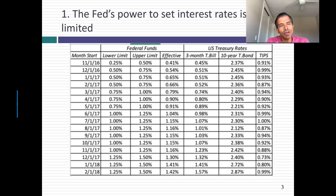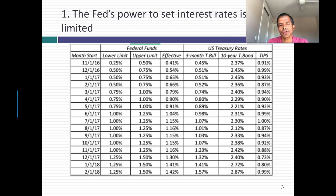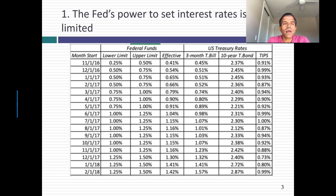The Fed funds rate is correlated with short-term interest rates. Looking at the period starting in December 2016 when the Fed has been raising the Fed funds rate, you can see T-bill rates have also gone up. However, the relationship with long-term rates is much weaker. Long-term rates have drifted up over that period, but there were months where the Fed raised the Fed funds rate and T-bond rates actually went down.